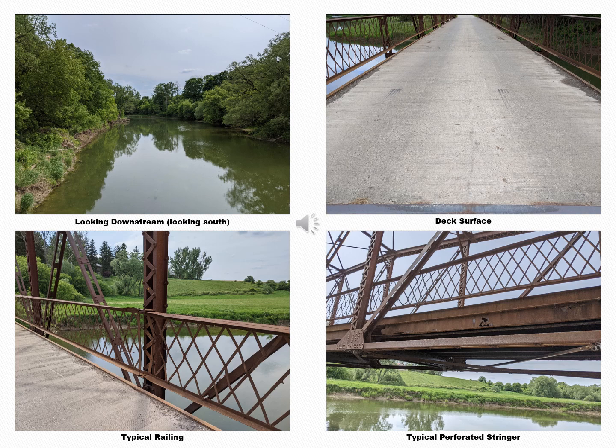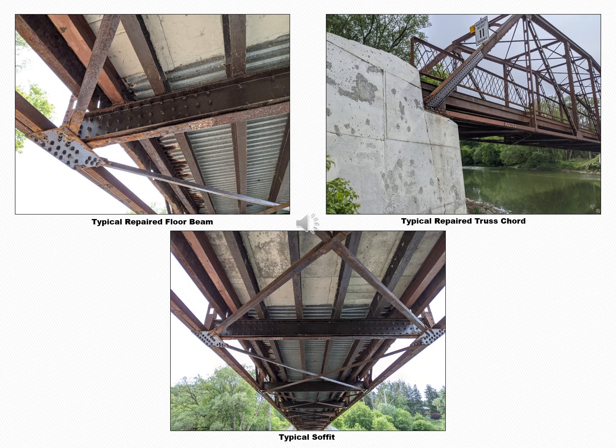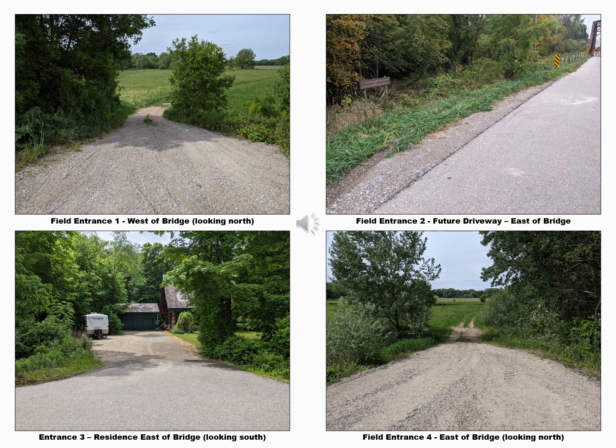The second image is of the deck surface. The third image is of a typical railing. The fourth image is of a typical perforated stringer. This slide has three images of the Bridge Street Bridge: the first image is of a typical repaired floor beam, the second image is of a typical repaired truss cord, and the third image is of a typical soffit. This slide has four images of entrances: field entrance 1 west of the bridge looking north; field entrance 2, a future driveway east of the bridge; entrance 3, a residence east of the bridge looking south; and field entrance 4 east of the bridge looking north.